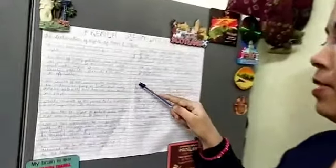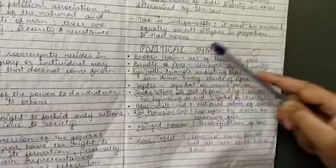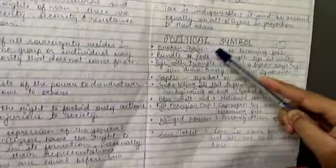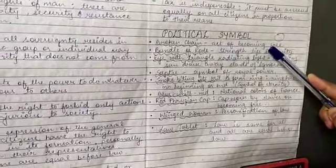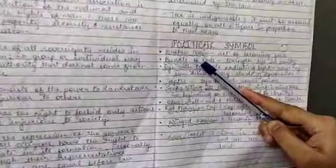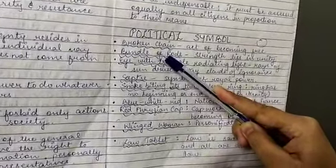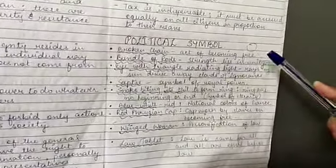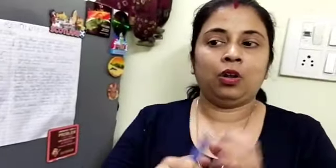There were numerous political symbols that were coming into power. First is the broken chain, which shows the act of becoming free — setting oneself free. Next is the bundle of rods, which symbolizes that strength lies in unity. If there is one stick it can be broken, but if there is a bundle of sticks it is hard to break.